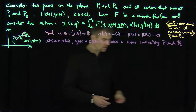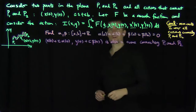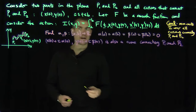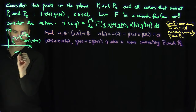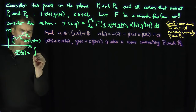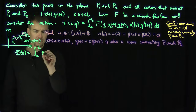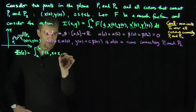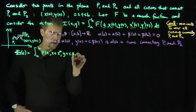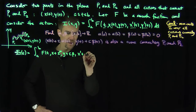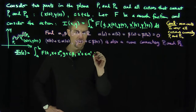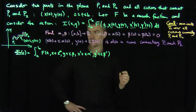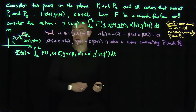Now here comes the calculus part. We're going to replace x and y with x + epsilon*alpha and y + epsilon*beta. So if we look at that perturbation, I consider the function phi: phi(epsilon) is the integral from a to b of f of t, x + epsilon*alpha, y + epsilon*beta, x' + epsilon*alpha', and y' + epsilon*beta', dt.